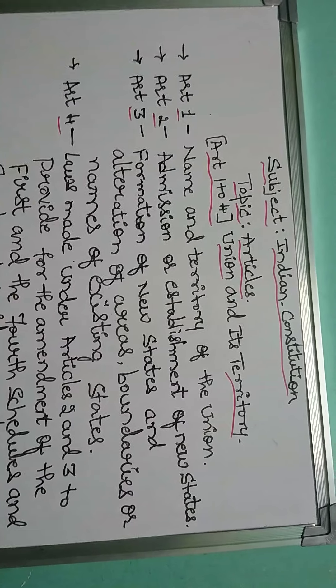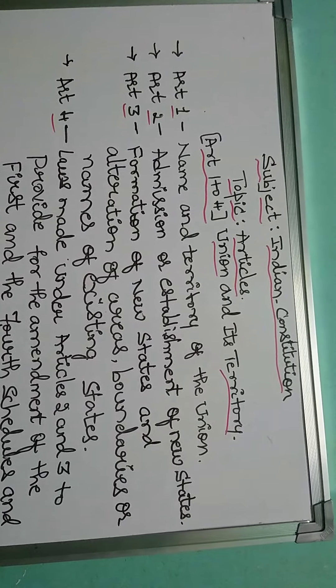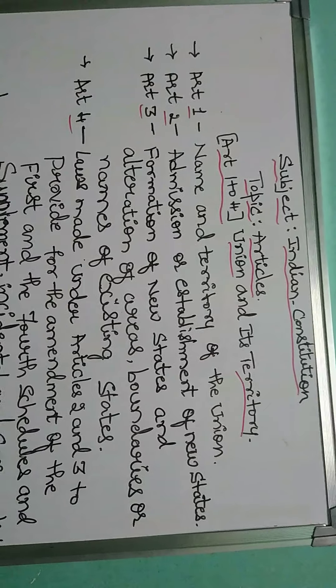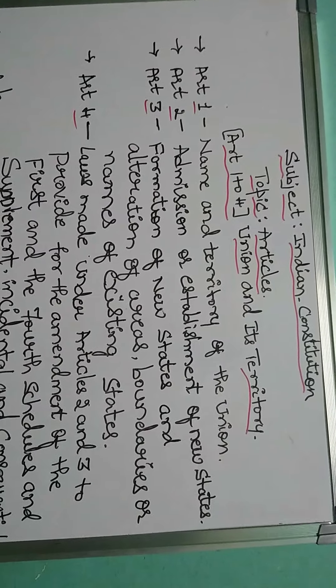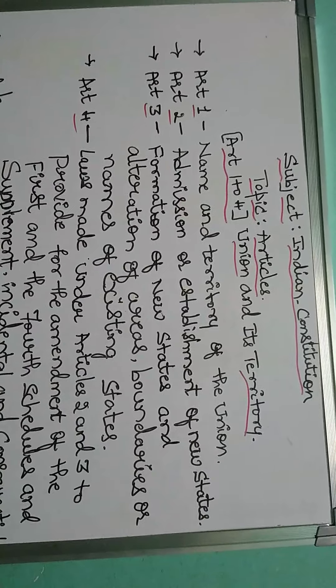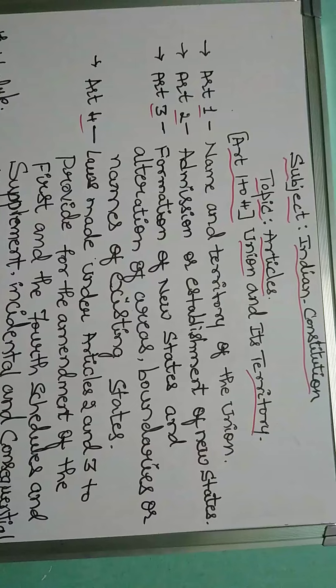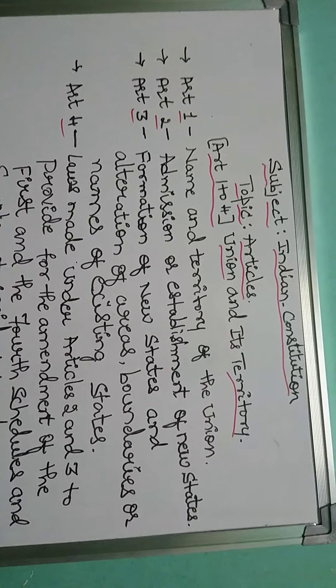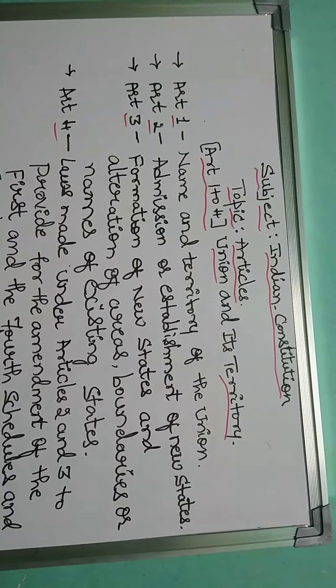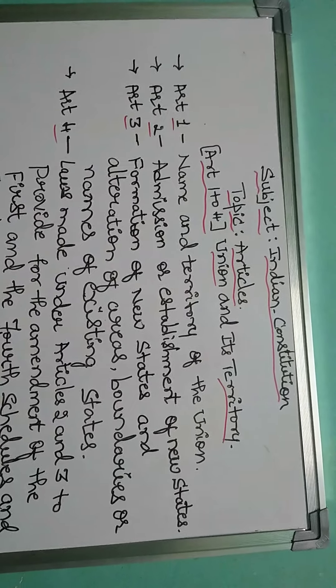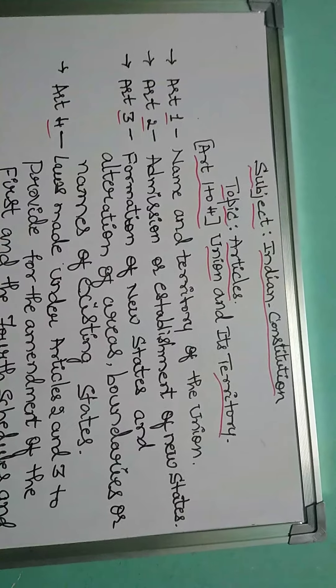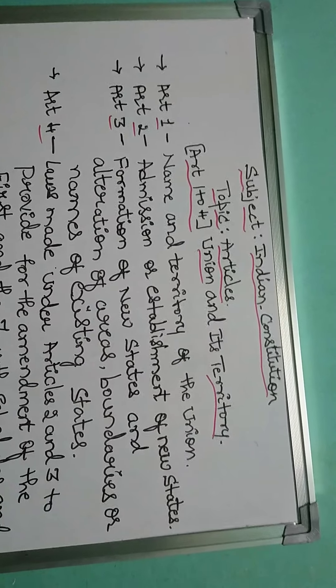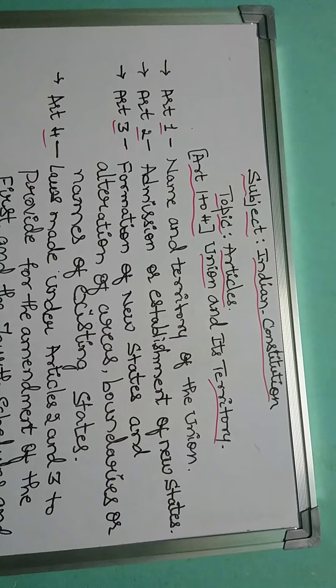This change happened after 1956. After independence in 1947, there were 147 princely states in the country. In the first states, the cultural system was not the same as the linguistic system.